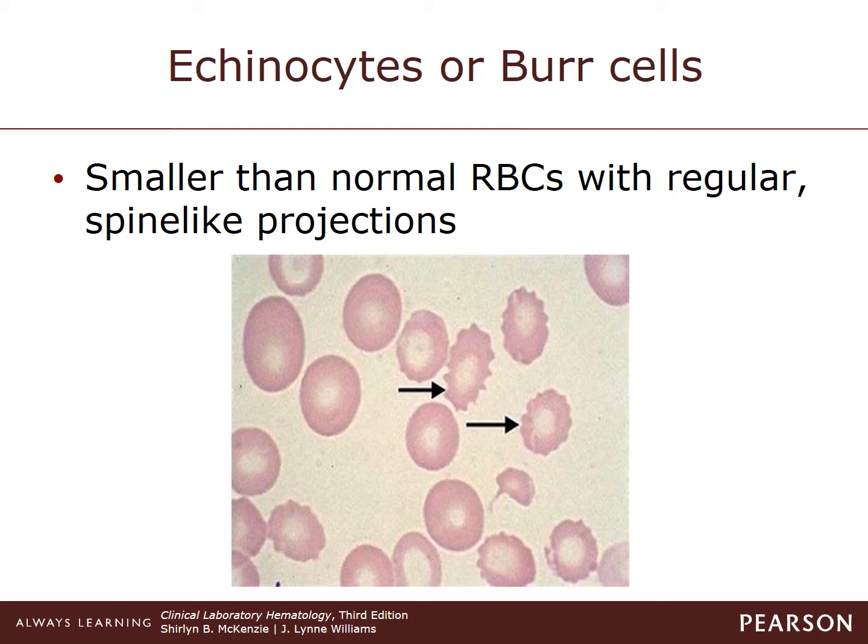Echinocytes, or burr cells, are smaller than normal red cells with a spiny-like projection evenly distributed all around the cell. The most common type of artifact is this burr cell and can be seen after the cells have been stored at 4 degrees Celsius for several days.